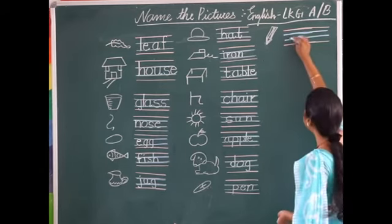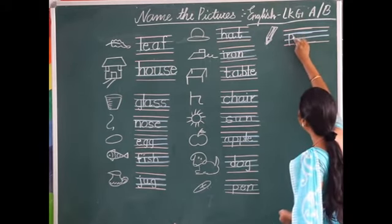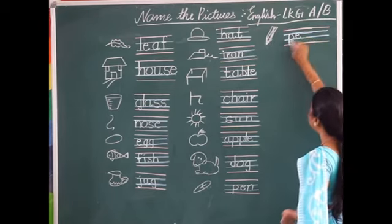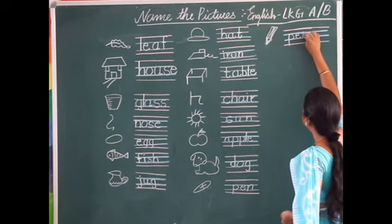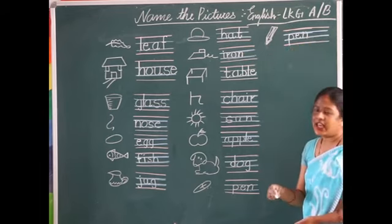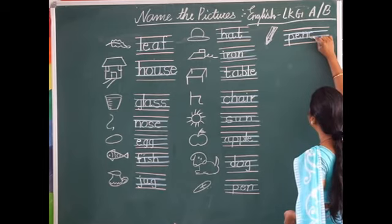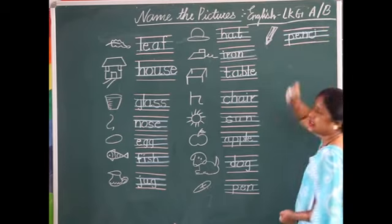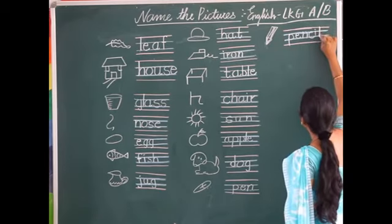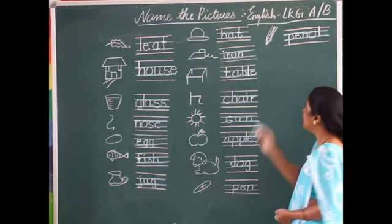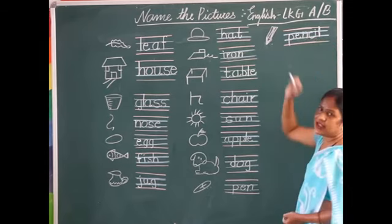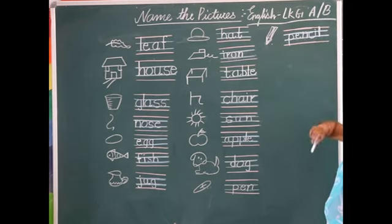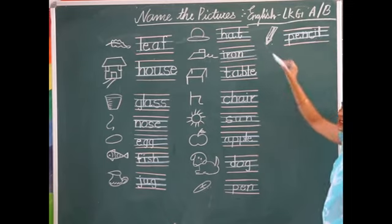A standing line with a curve joining the blue lines makes the letter P. A sleeping line joining both the blue lines makes the letter E. A standing line joining both the blue lines makes the letter N. A standing line with a curve joining both the blue lines makes the letter C. A standing line joining both the blue lines makes the letter I. A standing line with a curve joining both the blue lines makes the letter L. P-E-N-C-I-L, pencil. Once more: P-E-N-C-I-L, pencil. Again: P-E-N-C-I-L, pencil.